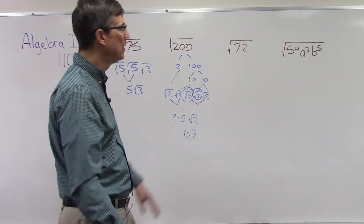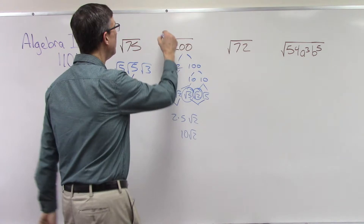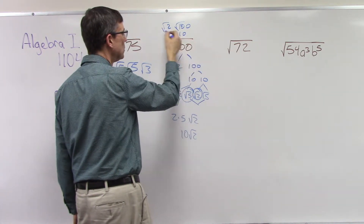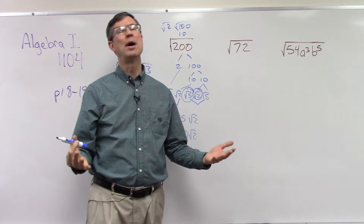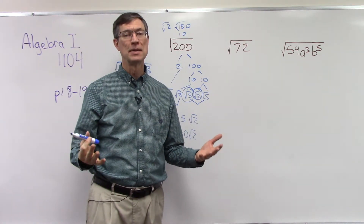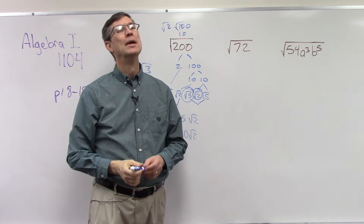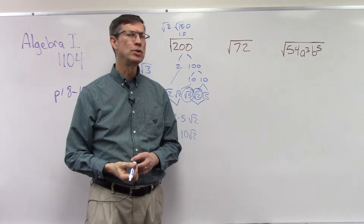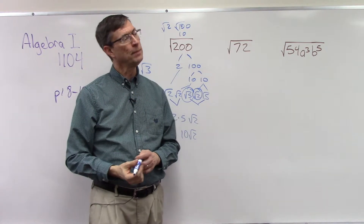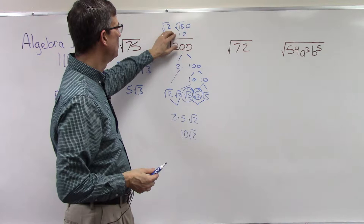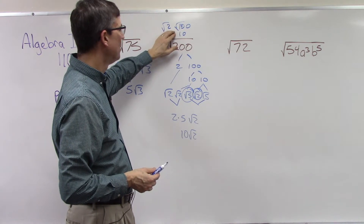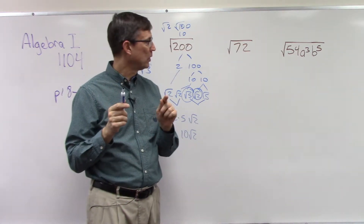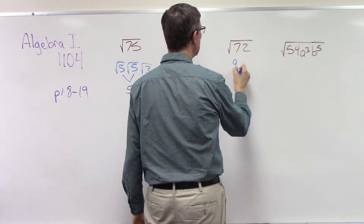You would have gotten the same answer if you said square root of 2 times square root of 100 and recognized that square root of 100 is 10 — you get 10 square root of 2. That's what I love about math: there are multiple ways of doing it and getting the right answer. Unlike English and history where there's opinion and exceptions to the rule, there are no exceptions in math. This method always works for every single problem.